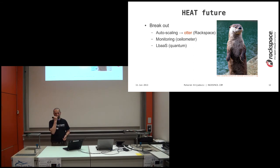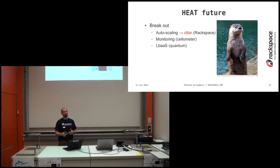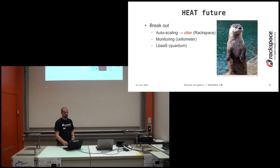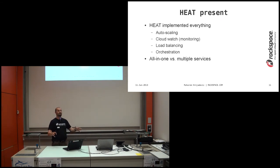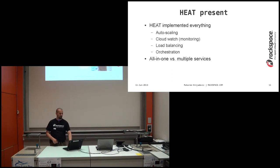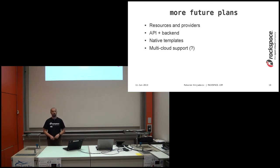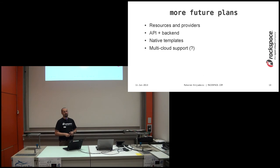Likewise for load balancing: Heat implemented load balancing using a virtual machine running HAProxy, but the Neutron networking project is implementing load balancing as a service. Once that's ready, Heat will use that instead. So Heat, which started as a collection of all these components, is shedding weight and complexity and becoming just the orchestration framework — which is the right way to go about things.